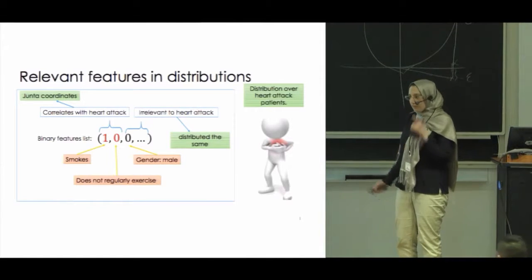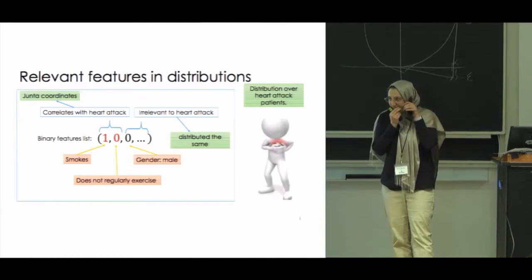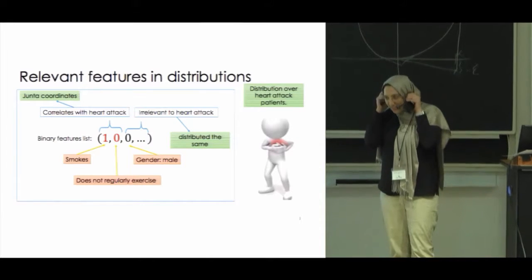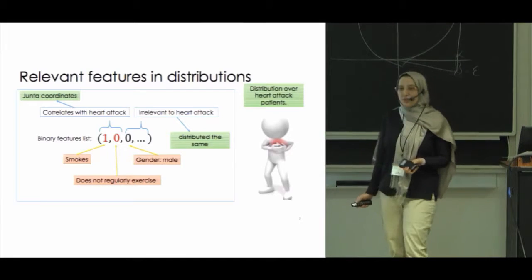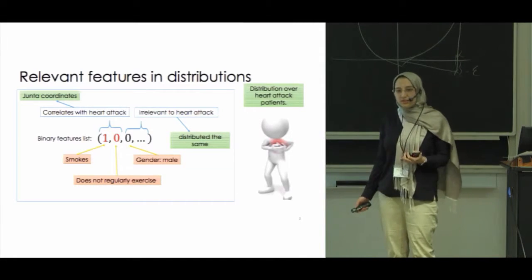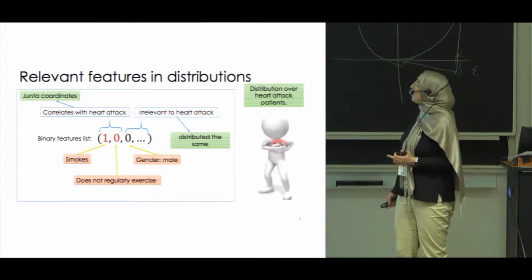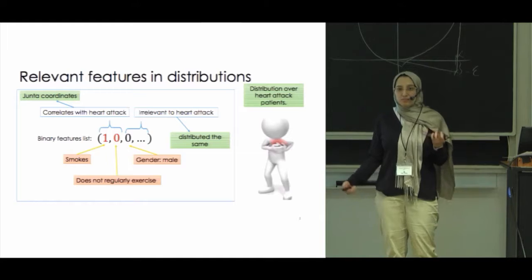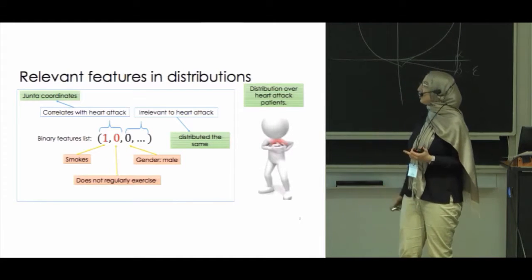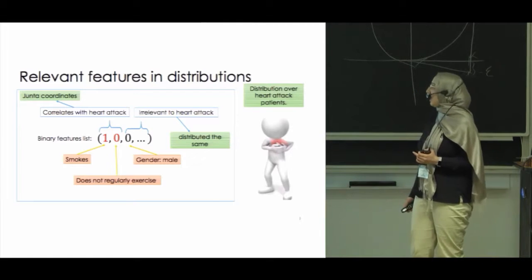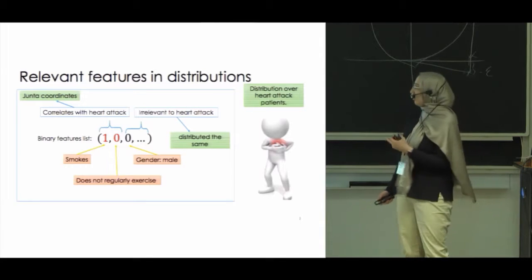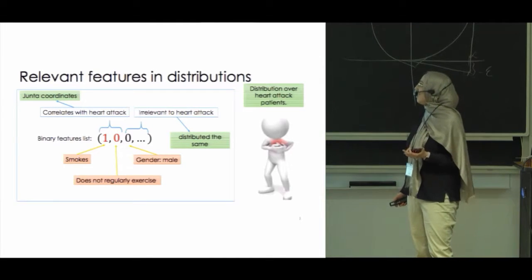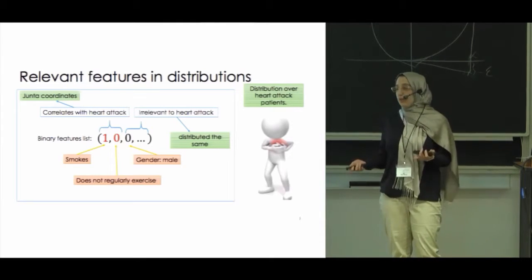Let's start with the problem definition. We focus on the problem of finding relevant features in a distribution. Assume there is an unknown distribution over heart attack patients and you want to find a set of features that correlates with heart attack. For each patient you get a binary feature list — for example, features like smoking, exercising, and gender — and now you want to find a set of relevant and irrelevant features.